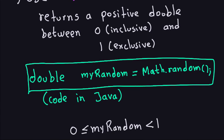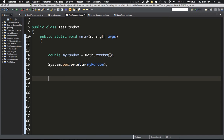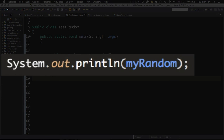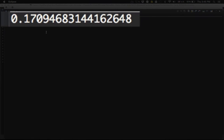Once I generate this number with that line, the double variable will hold a value that is greater than or equal to 0. Using a for loop I can generate as many random numbers as I want. Let me go back to the Eclipse application — I have the line of code: double myRandom = Math.random(); and another line to print out the value. If I save and run it, you'll see a double on the console.